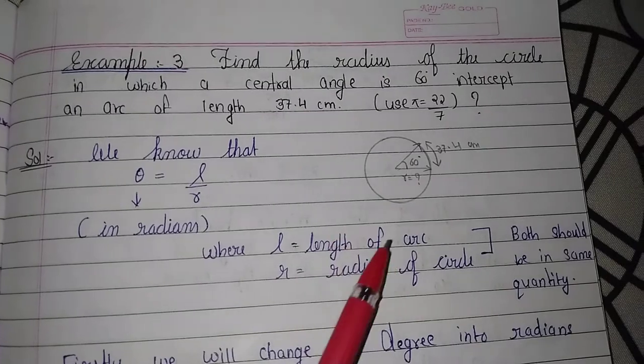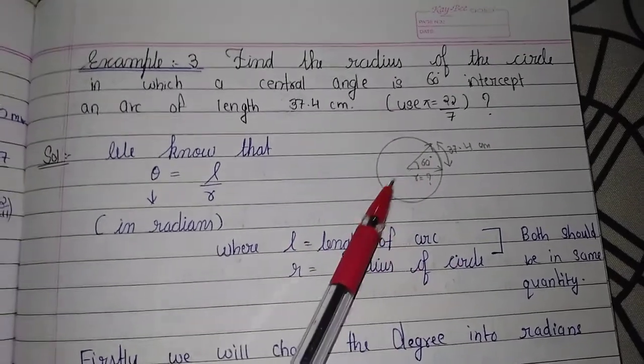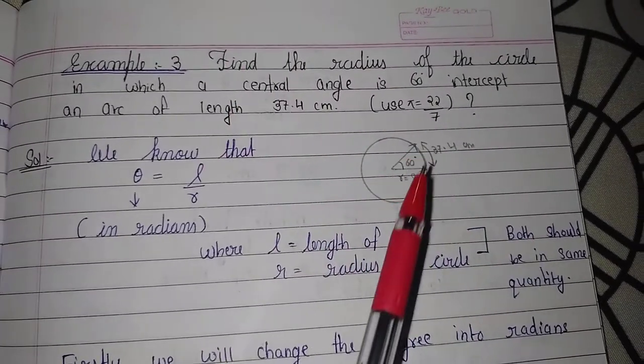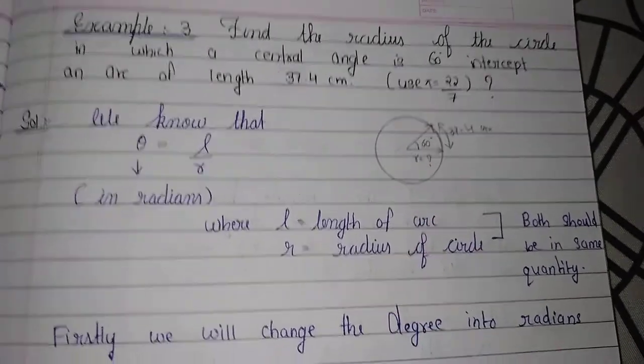The length of arc and radius of the circle should be in the same unit.